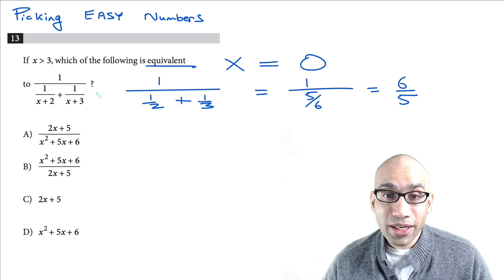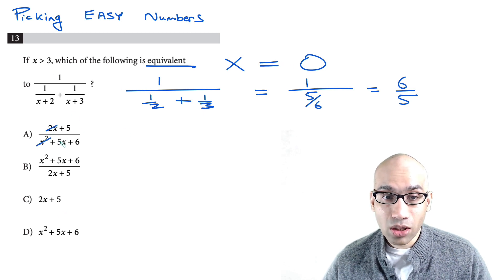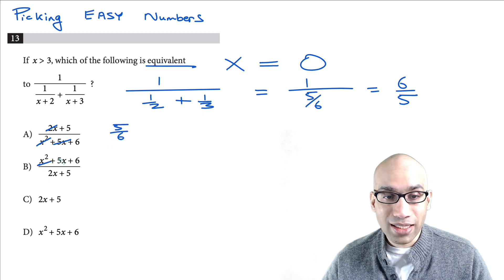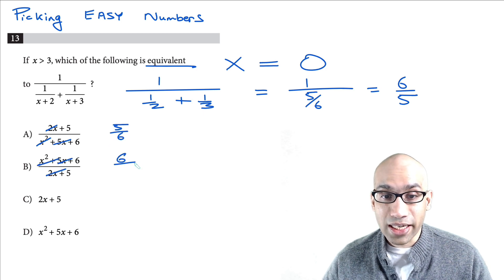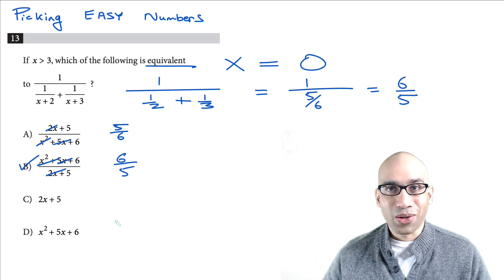The next step is to set x equal to 0 in all of the answer choices — just cancel out all the x terms. One choice gives 5/6, another gives 6/5, and that gives you B as your correct answer.